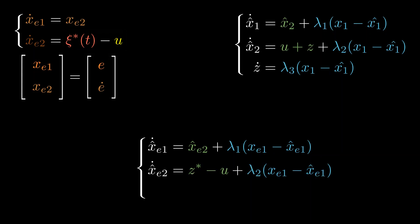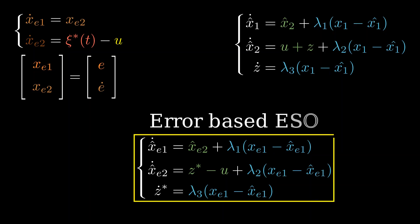ξ2 needs correction term as well. As you remember, the disturbance estimate equation has no prediction term, only correction. This is how we arrive at the error-based extended state observer.